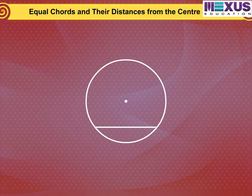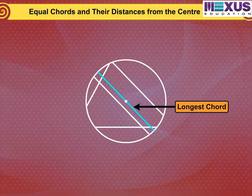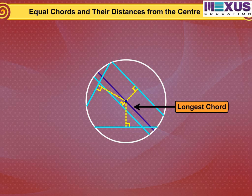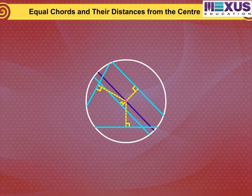Now a circle can have infinitely many chords. The longest chord is nearer to the center than the other smaller chords. Observe this by drawing several chords of a circle of different lengths and measuring their distances from the center. We can observe that the distance of the diameter, which is the longest chord, from the center is zero since the center lies on it. Let us see some relationship between the length of chords and their distances from the center in the next slide.